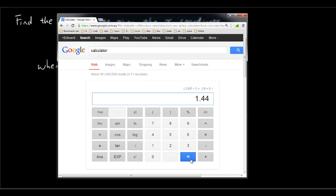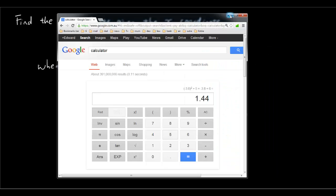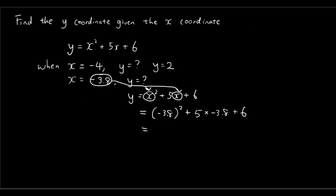As you can see from our graph, when x is negative 3.8, y is about 1.44. So you can sort of tell by moving the cursor around on the graph. Actually it says when x is negative 3.8, yes, y is about 1.44. Y is 1.44.